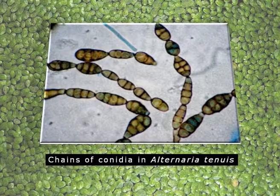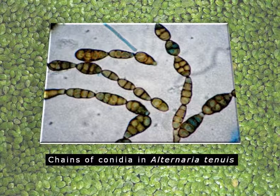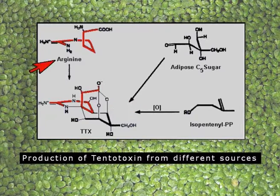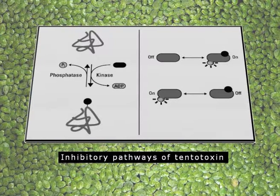Tentoxin is produced by Alternaria alternata or Alternaria tenuis. The conidia of Alternaria tenuis are typically oval-shaped, produced in long chains whenever they find any susceptible host. The tentoxin structure is a cyclic tetrapeptide, produced from different amino acids like arginine, from adipose sugar, or from isopentenyl pyrophosphate — so different primary metabolites within the plant cell are utilized by the pathogen to produce tentoxin. Tentoxin primarily inhibits the phosphorylation process both in respiration and in photosynthesis, so energy generation will be severely impaired.